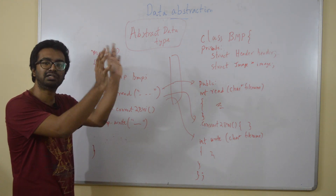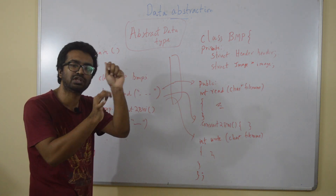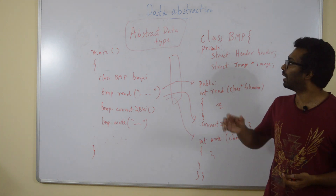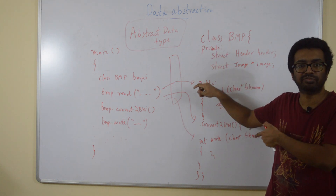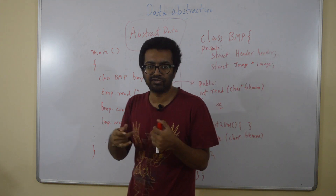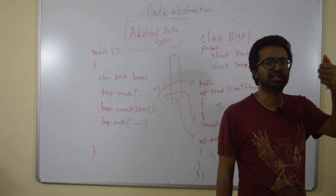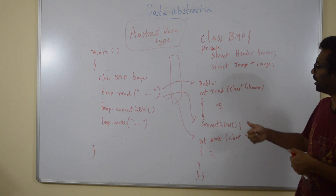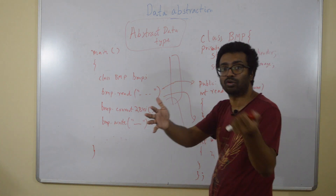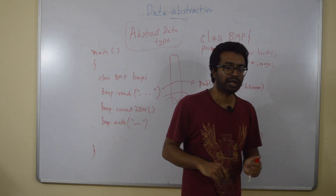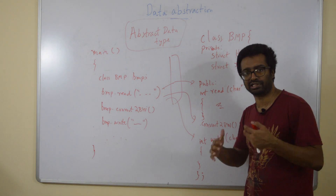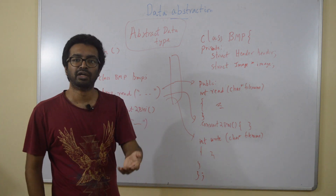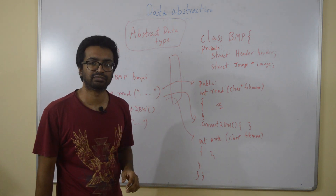The main program can only see what the BMP class allows it to see — only the read, convert, and write functions. The rest is abstracted out. Just like int and float are data types that give you operations like addition and multiplication, the BMP data type gives you read, convert, and write. Because you don't know how the data is stored internally, it is called an Abstract Data Type.